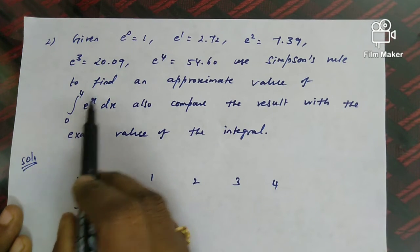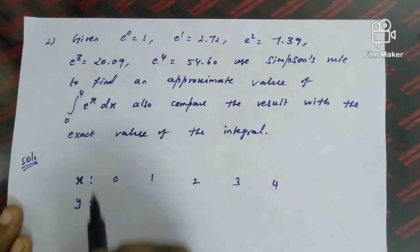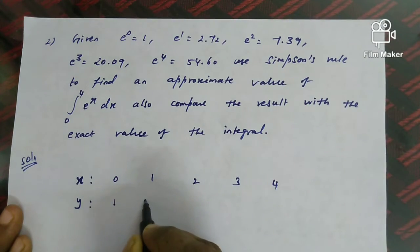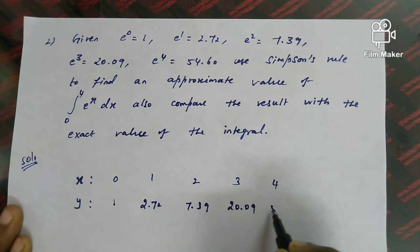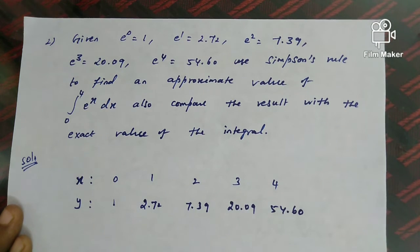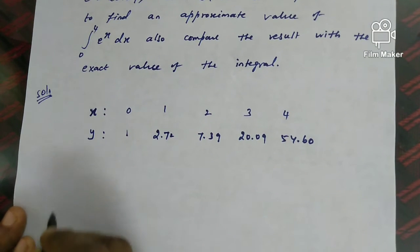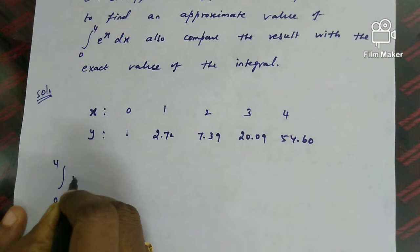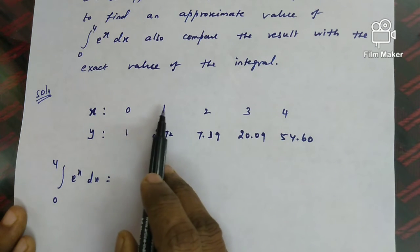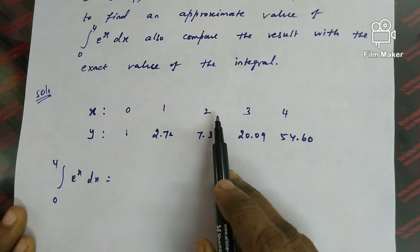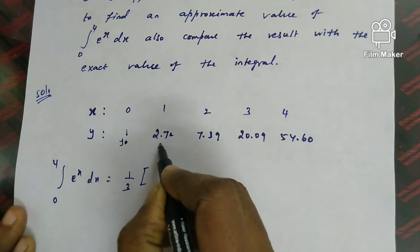Since y = eˣ, applying Simpson's 1/3 formula: ∫₀⁴ eˣ dx = h/3 × [y₀ + y₄ + 2(y₂) + 4(y₁ + y₃)]. The interval h = 1 (since 1−0 = 2−1 = ... = 1), so h/3 = 1/3.